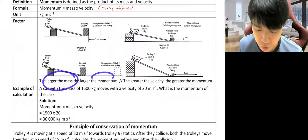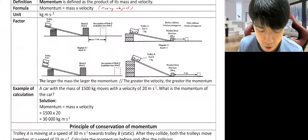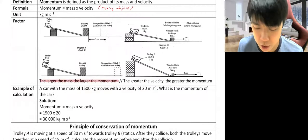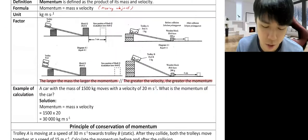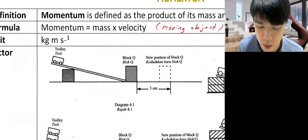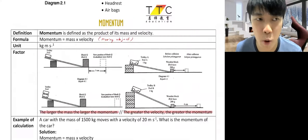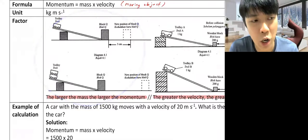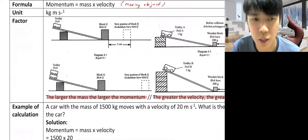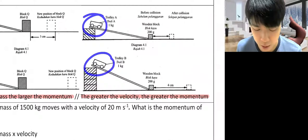The greater the mass, the greater the momentum. The greater the velocity, the greater the momentum. The calculation already shows you — greater mass times greater velocity gives a greater momentum if both numbers increase. But usually in an experiment, we don't test both factors together — we can only do one at a time. For instance, when testing mass, we use one trolley versus two trolleys. For velocity, we use the same trolley but drop it from different heights, which translates to different velocity.